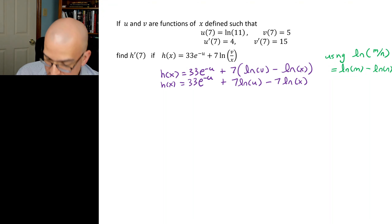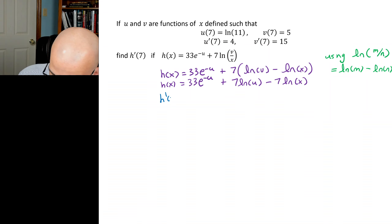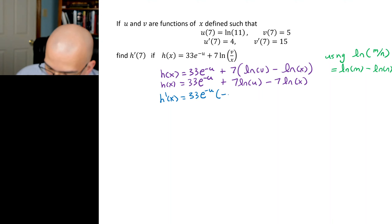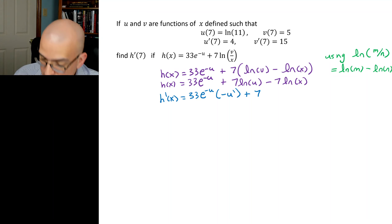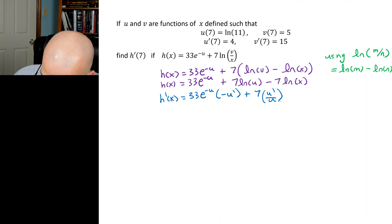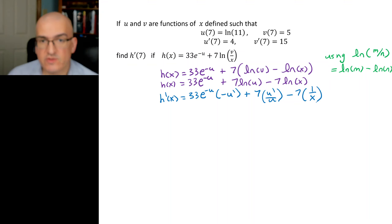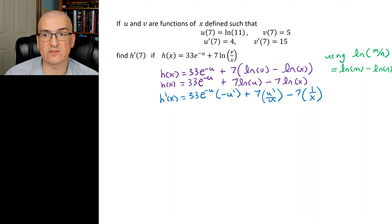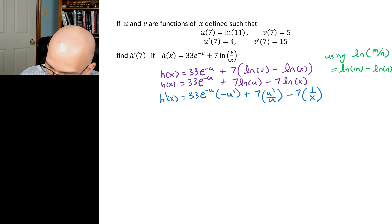Now we differentiate: h'(x) = 3e^(−u) × (−u') + 7 × (u'/u) − 7/x. Here e^(−u) uses the chain rule for exponential functions, ln(u) gives u'/u by the log chain rule, and ln(x) differentiates to 1/x (no x' needed since x is the variable, not a function).